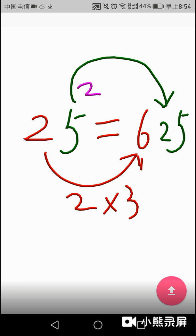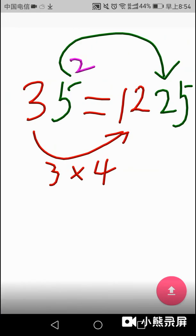So, the result is 625. Let us see another example. Now, we see the square of 35. First, the right part of the result must be equal to 25.